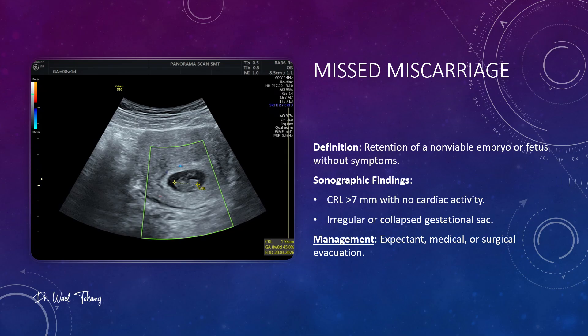Sometimes the loss has already occurred but there are no obvious symptoms. This is called a missed miscarriage — when a non-viable embryo or fetus is retained without signs like bleeding or pain. On ultrasound, look for a crown-rump length over 7 mm with no cardiac activity, or an irregular collapsed gestational sac. Management options include expectant care, medical treatment, or surgical evacuation guided by the patient's condition and preference.